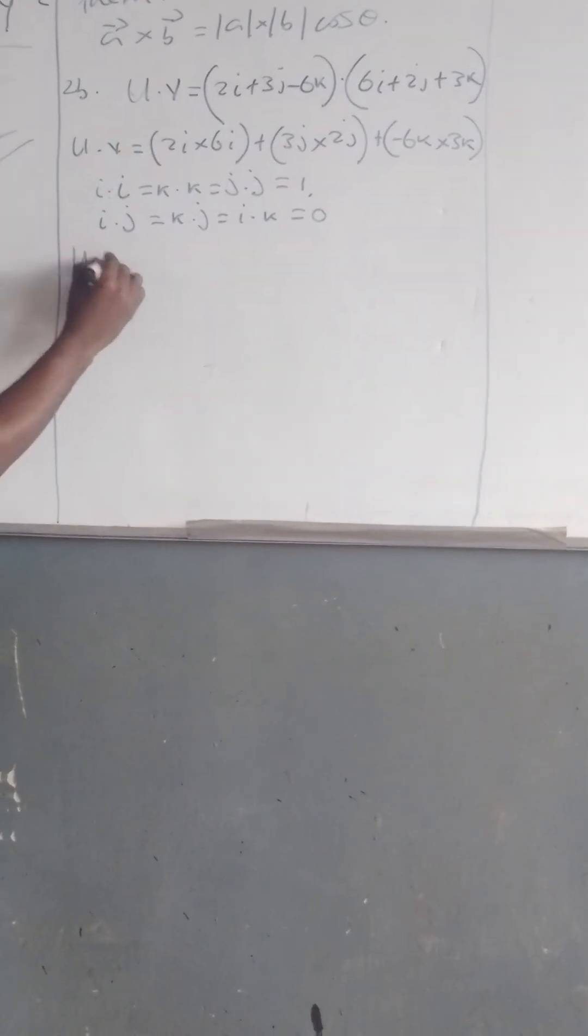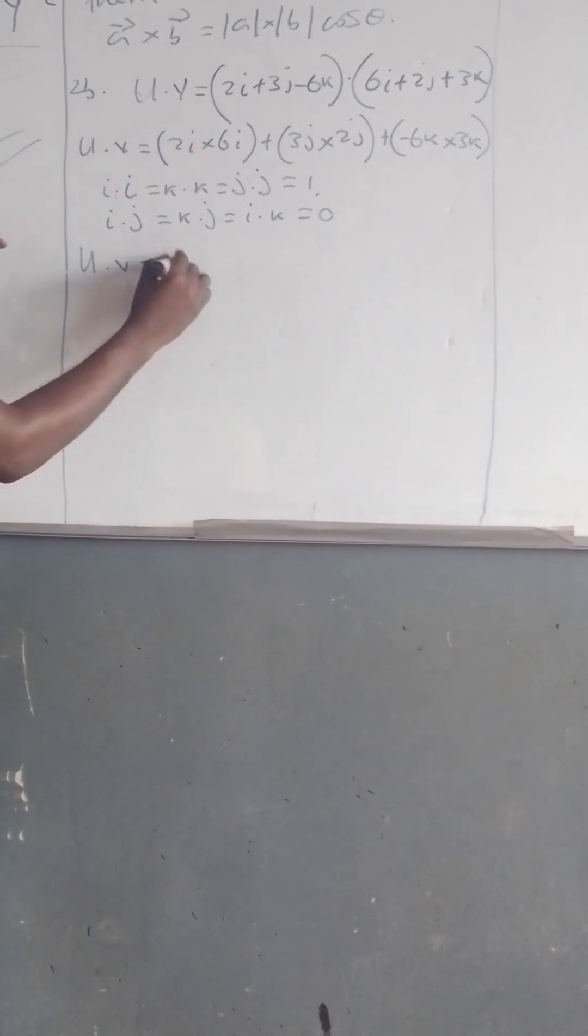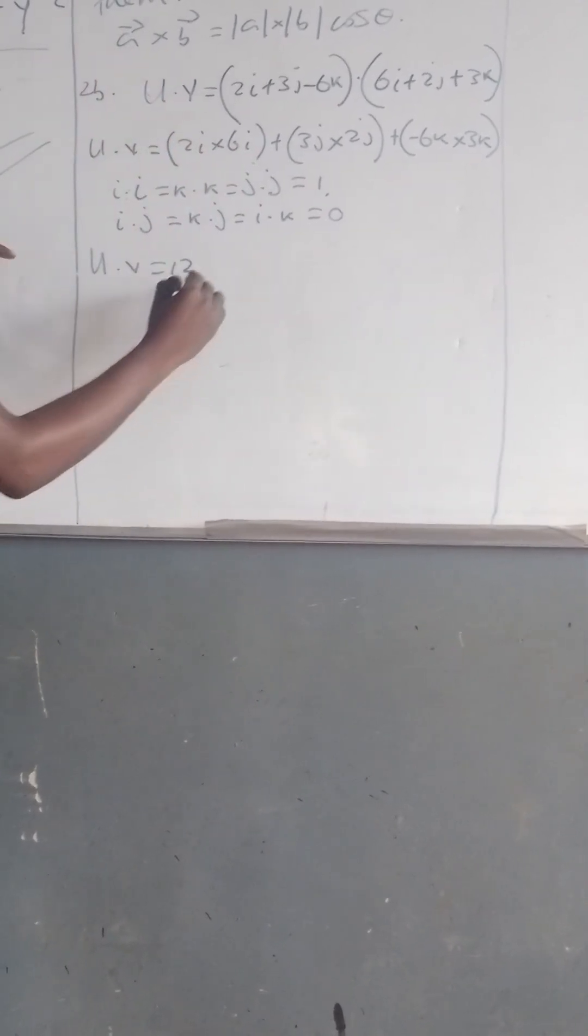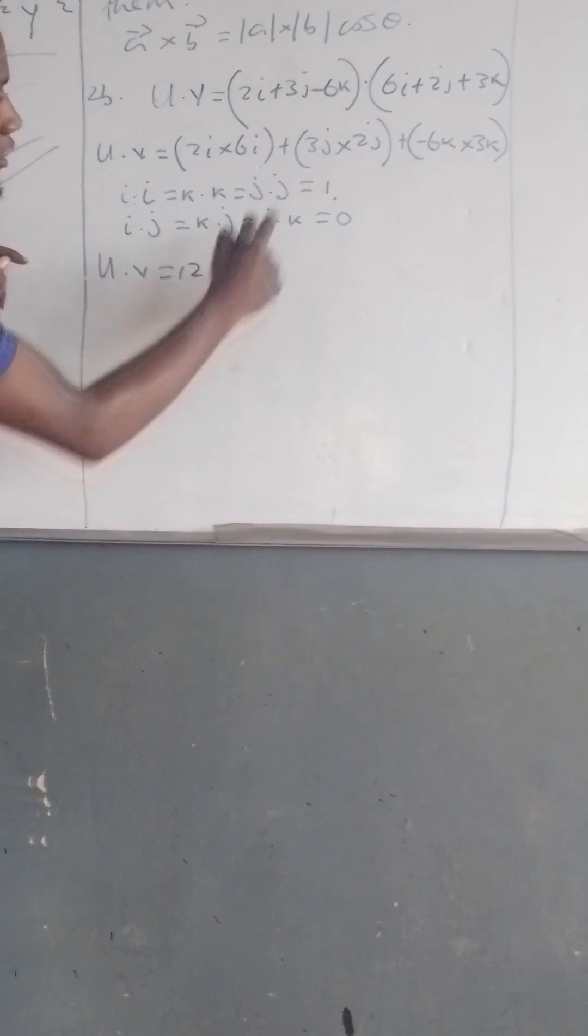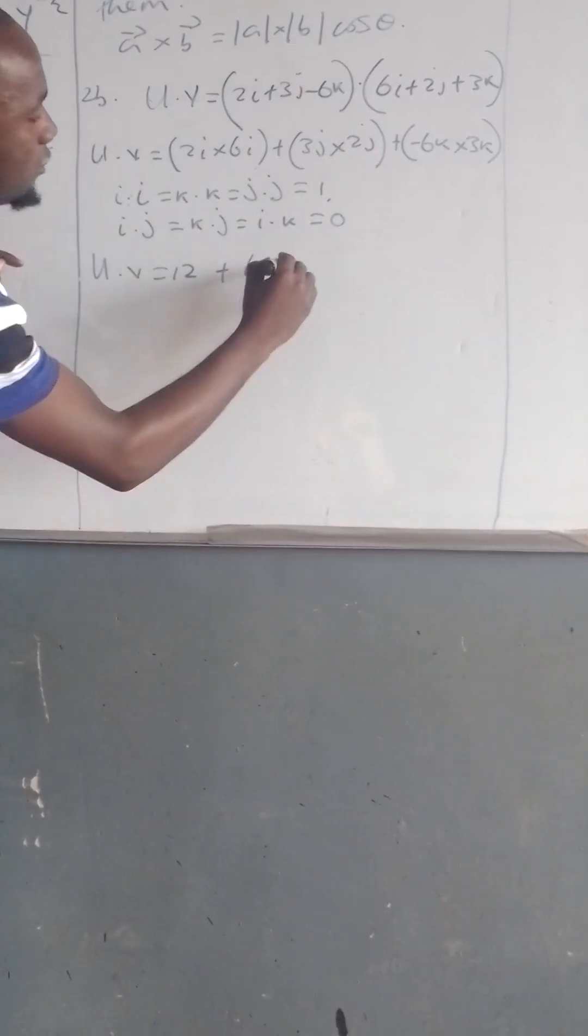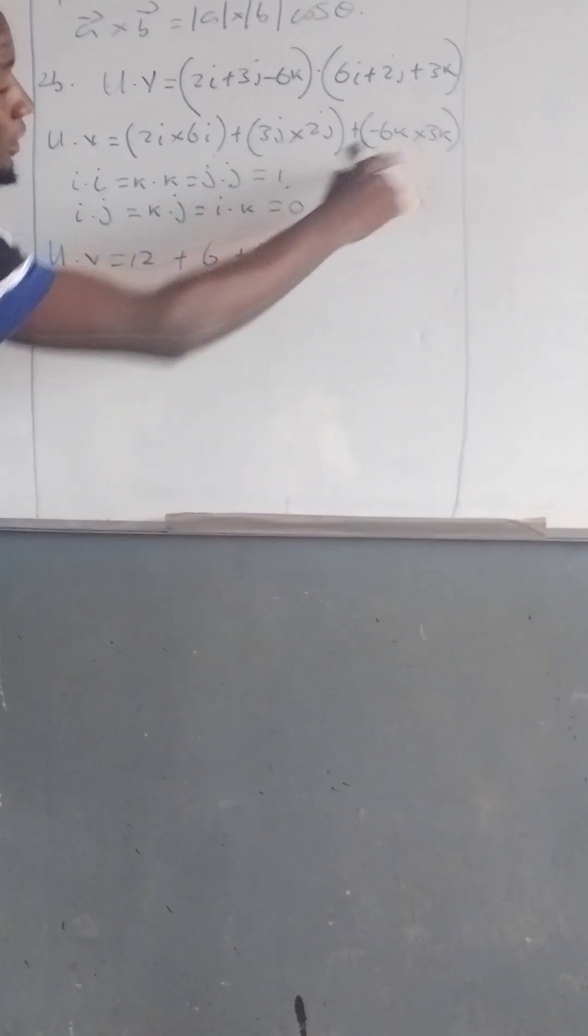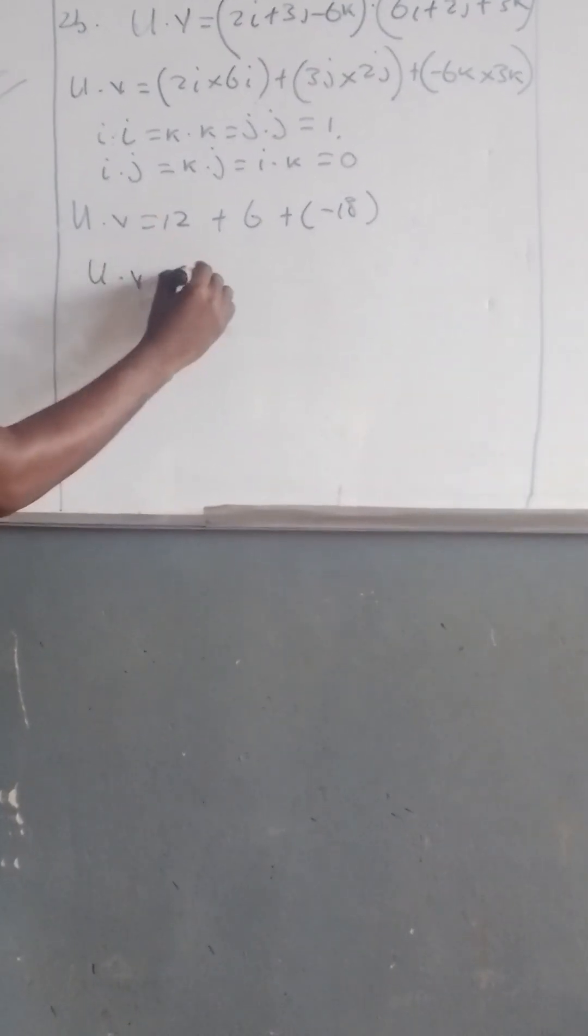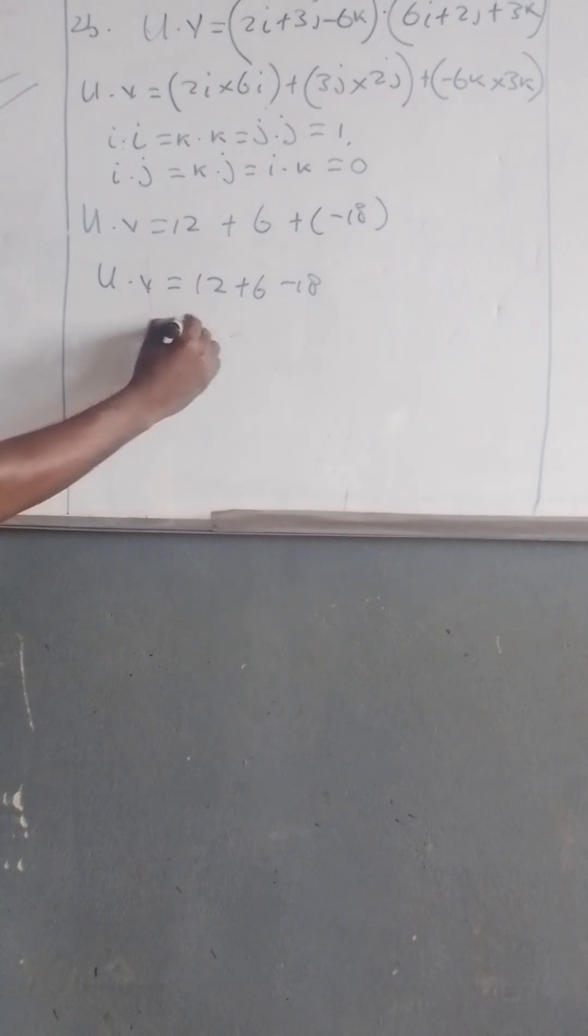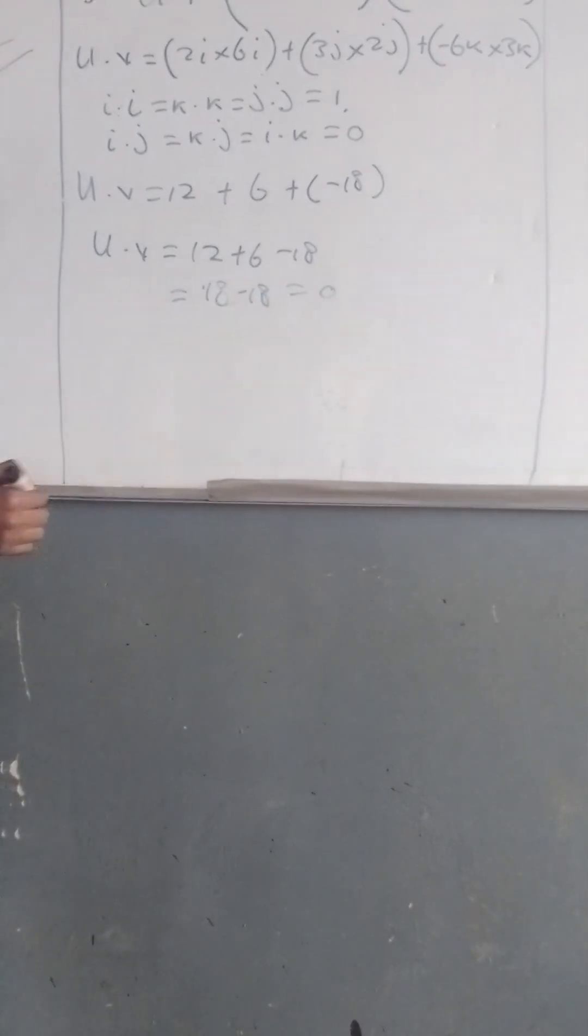So 2 times 6 equals 12, plus 3 times 2 equals 6, plus negative 6 times 3 equals negative 18. Therefore u dot v equals 12 plus 6 minus 18, which equals 18 minus 18, which equals 0.